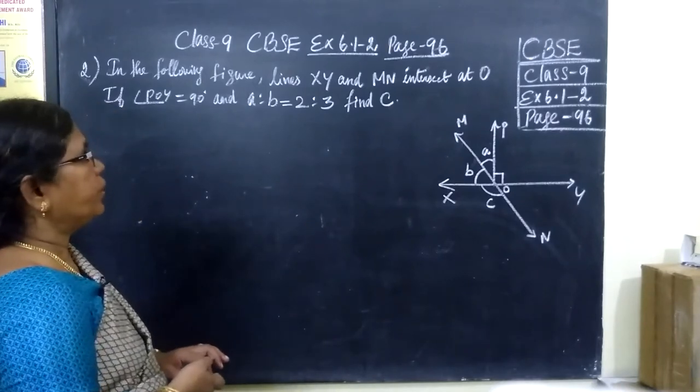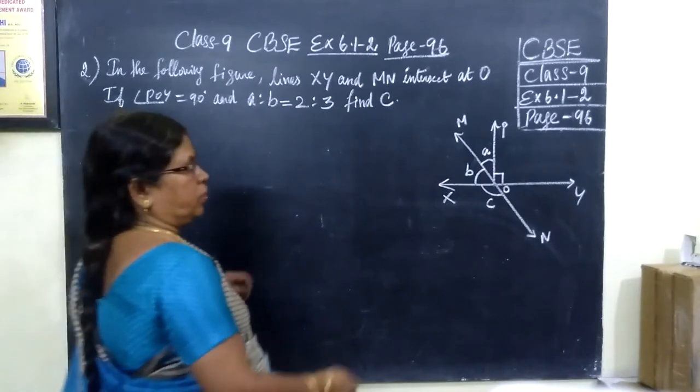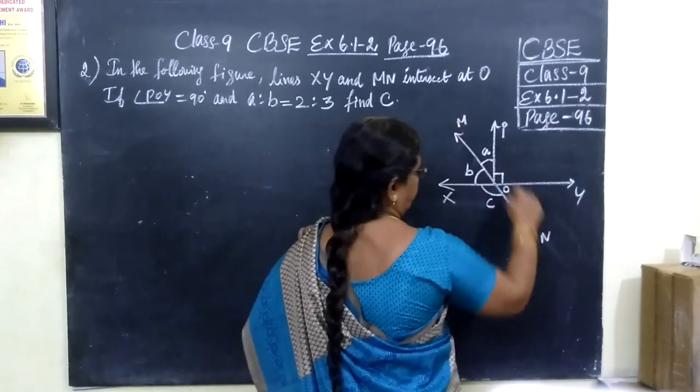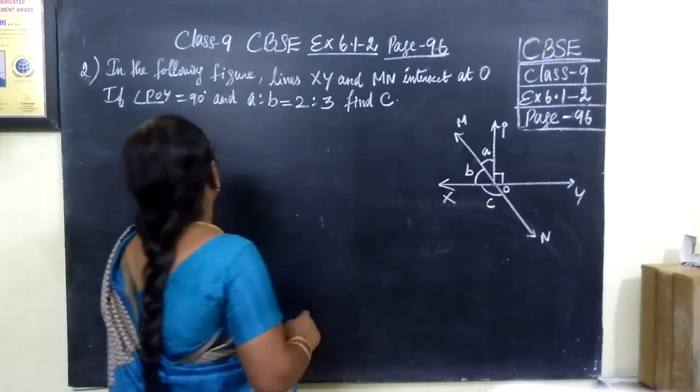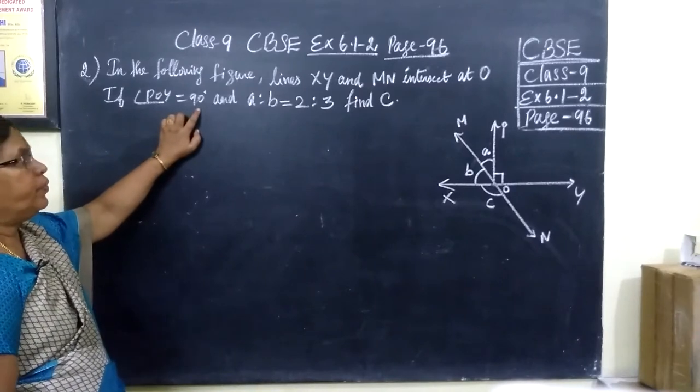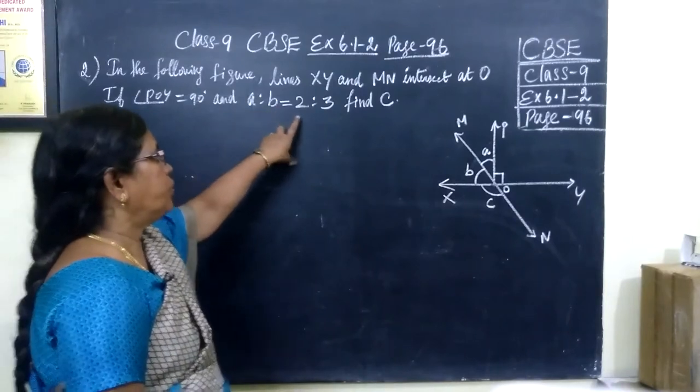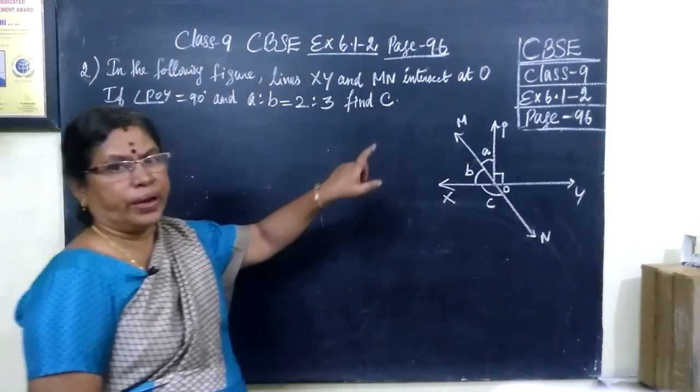In the following figure, lines XY and MN intersect at O. This is XY and MN, they intersect at O. If angle POY equals 90 degrees, it is given in the figure. And one more information: A is to B equal to 2 is to 3, and you want to find C.